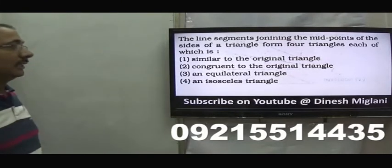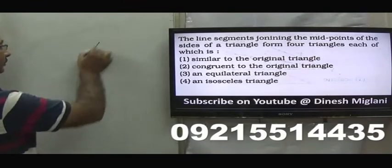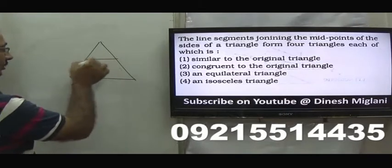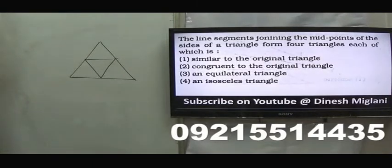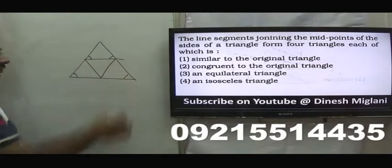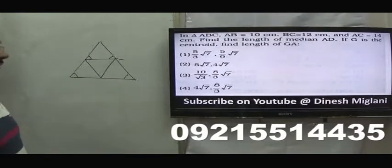Next question: the line segments joining the midpoints of the sides of a triangle form four triangles. These four triangles — congruent to original is wrong, equidistant and isolates are not correct either. What we can say is they are similar to the original triangle, because the joining lines are parallel to the opposite sides, making the corresponding angles equal. Hence the first option is my answer.